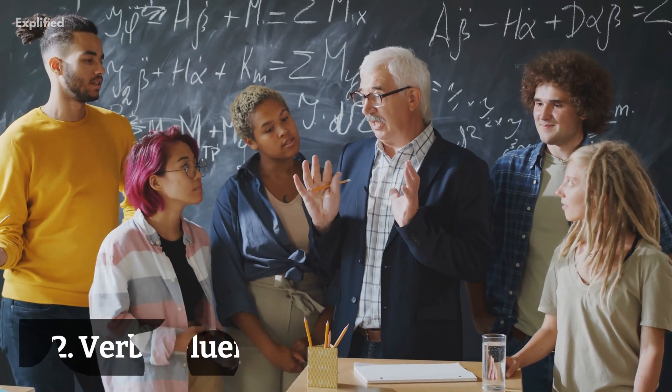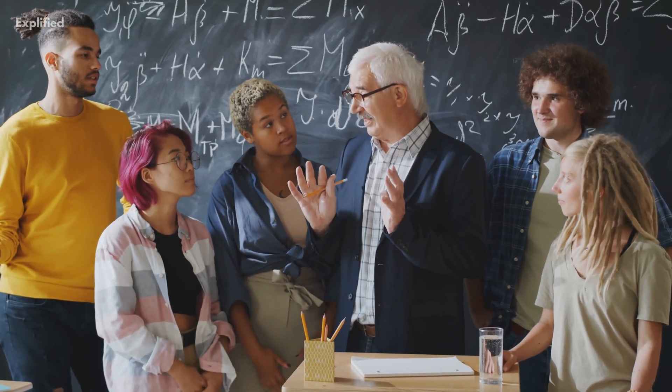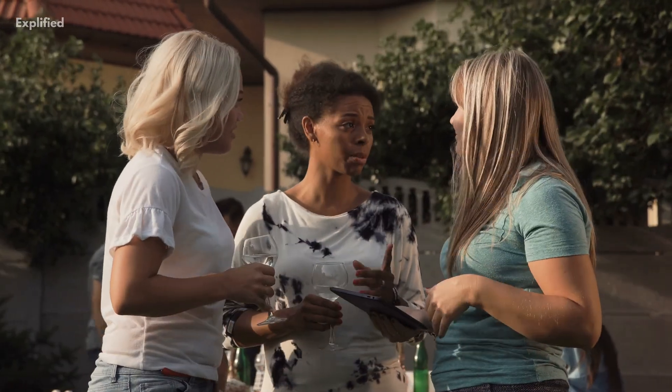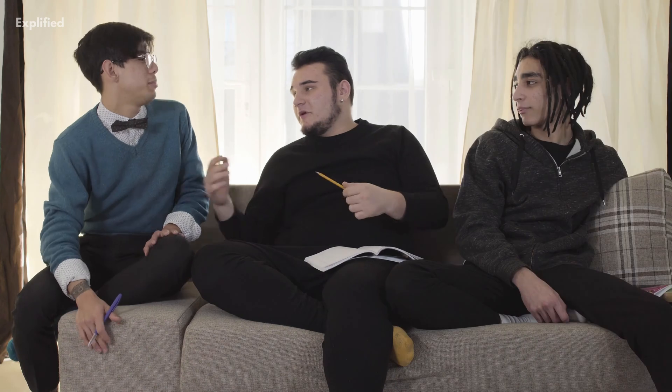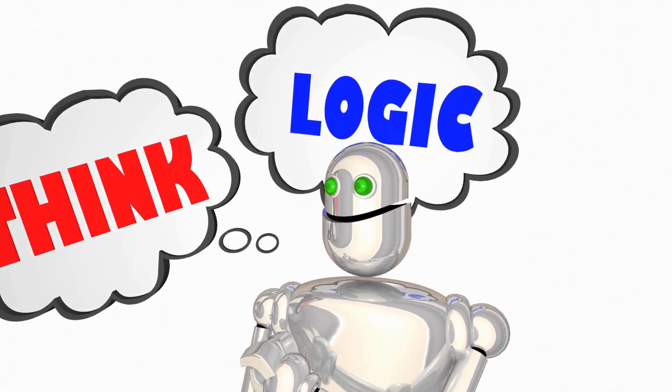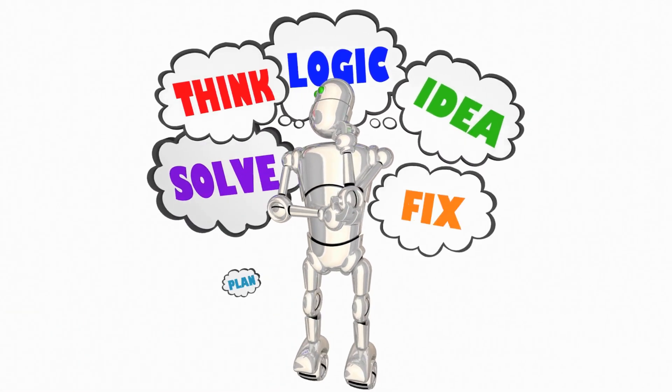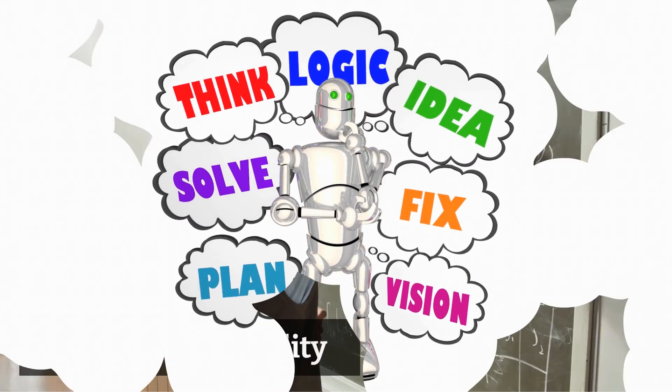The second ability is verbal fluency, which tests your speed and accuracy in coming up with words and sentences. This is tested in our everyday lives — verbal fluency is constantly measured when we have conversations in our routine. The more fluent and elaborate you are, the better you are at this ability. For example, the number of words you can come up with from a given alphabet within a minute determines your verbal fluency.